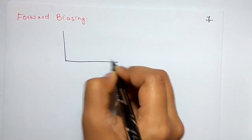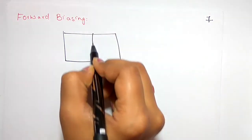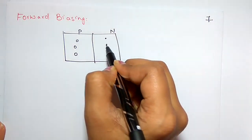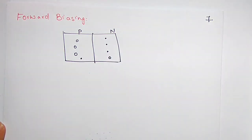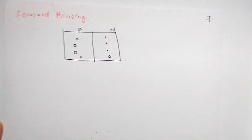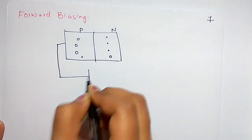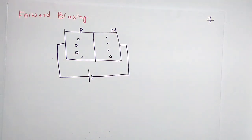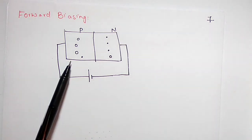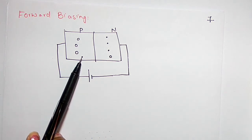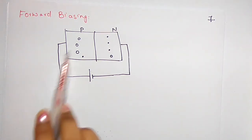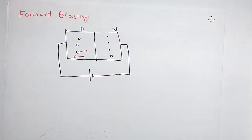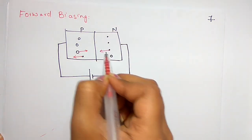Let's take a PN junction again. This is P and this is N. P will have majority holes and N will have majority electrons, with minority electrons on the P side and minority holes on the N side. If we apply an external voltage such that P type is connected to the positive terminal of the battery and N type is connected to the negative terminal, we know that like charges repel and unlike charges attract. Holes are positive charges and electrons are negative charges, so holes in P type will be repelled toward the junction and electrons in N type will also be repelled toward the junction.